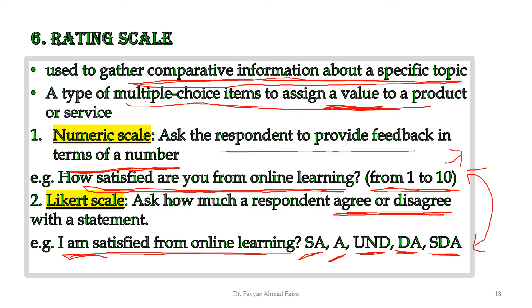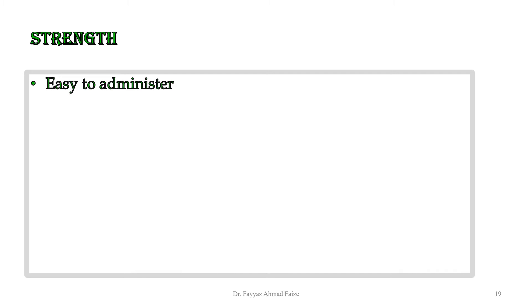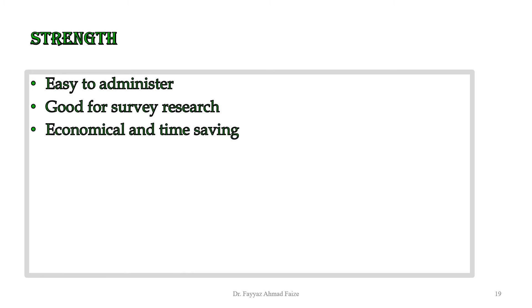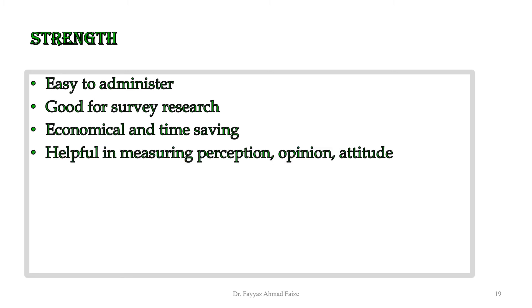Both items are almost the same way of asking questions, and you will still know about the satisfaction level of the student from each. The first item measures satisfaction on a scale of 1 to 10, and from the Likert item, the student can strongly agree and you would know they like online learning. The strengths of rating scale are that it is easy to administer, good for survey research with large populations, economical, time-saving, and helpful in measuring perception, opinion, or attitude.